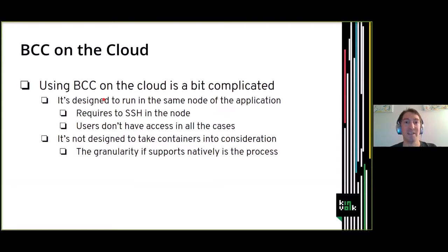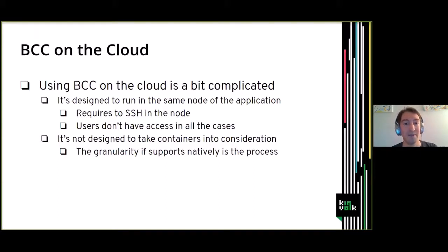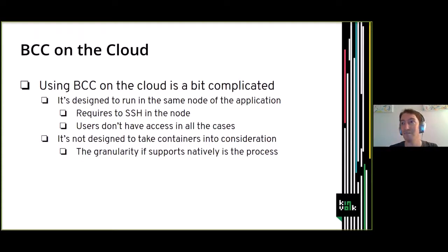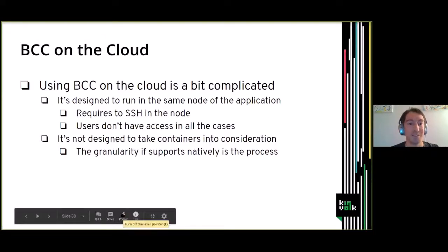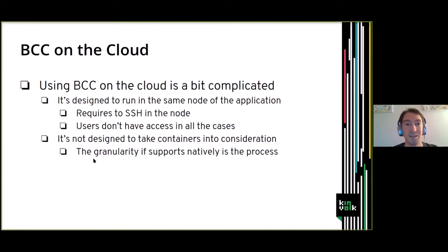What we've seen so far is using BCC on a single machine. What I want to talk about now is using it on a cloud, meaning when you have many machines to inspect. In that scenario, the user doesn't necessarily want to SSH into individual machines to trace them. Sometimes you want to trace at a different granularity — for example, if you run NGINX on different nodes with many replicas and want to trace all of them, or if a load balancer means you don't know which node traffic targets. These are some limitations of using BCC directly on the cloud.